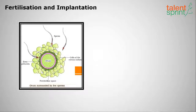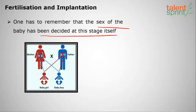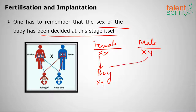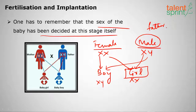The sex of the baby is decided at fertilization. Females have XX chromosomes and males have XY. To get a boy, one X from the female and one Y from the male fuse together. To get a girl, one X from the mother and one X from the father fuse. So the sex of the child is determined by the father, not the mother.